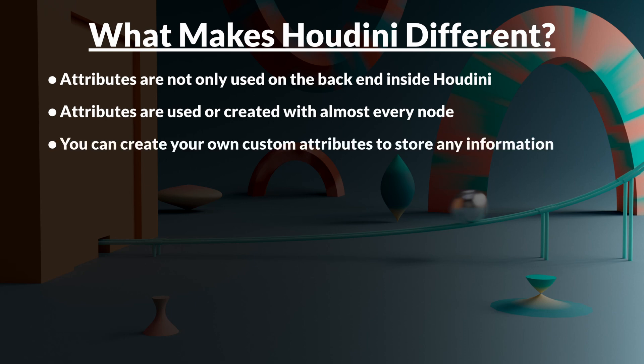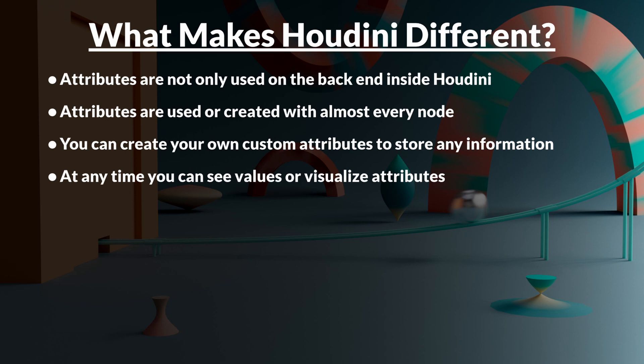You can even create your own custom attributes and store pretty much any information you want. You could literally create a point attribute called 'hello' and have it say whatever you want. At any time you can see the values and visualize the attributes inside Houdini through the geometry spreadsheet. You can also create visualizations of them — vectors, colors, and more. In newer versions of Houdini, you can just middle-mouse-button click on attributes and it'll create a visualizer for you.